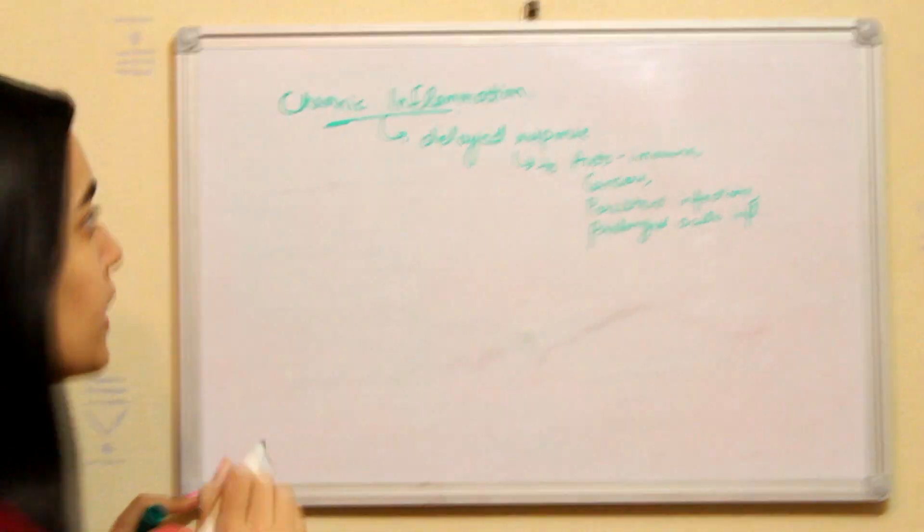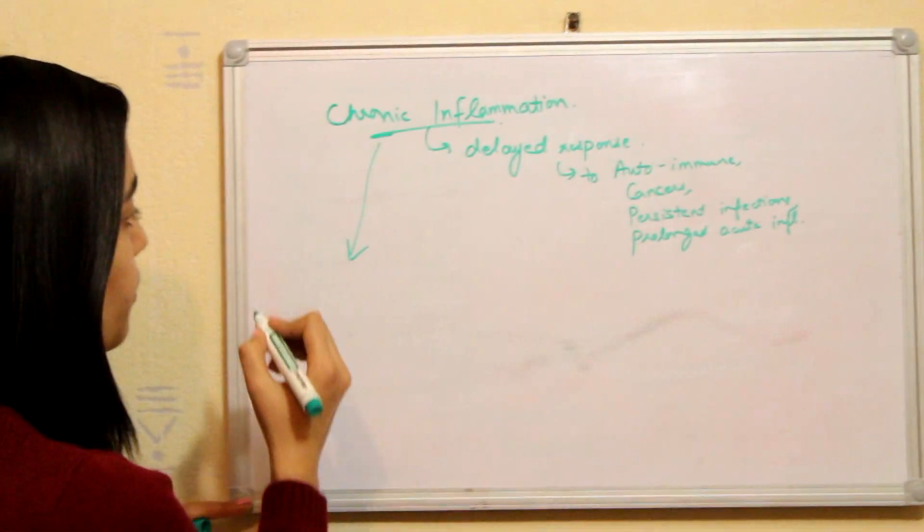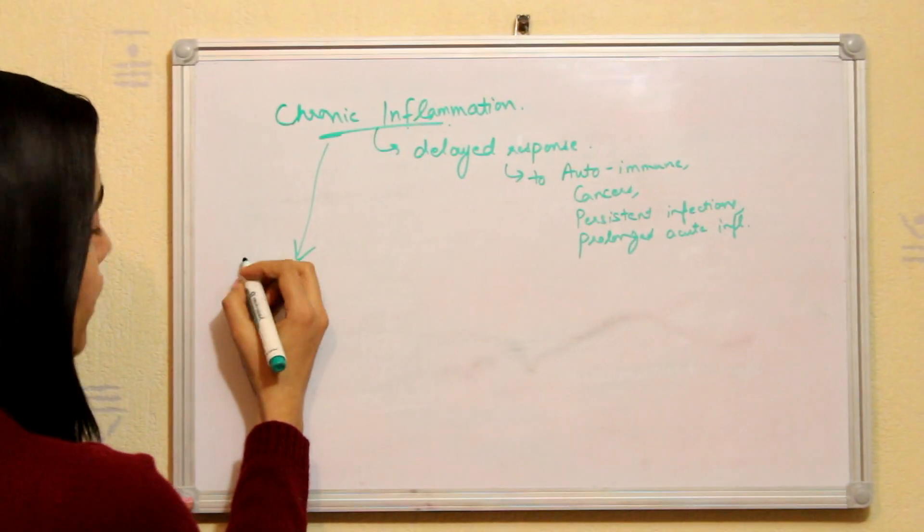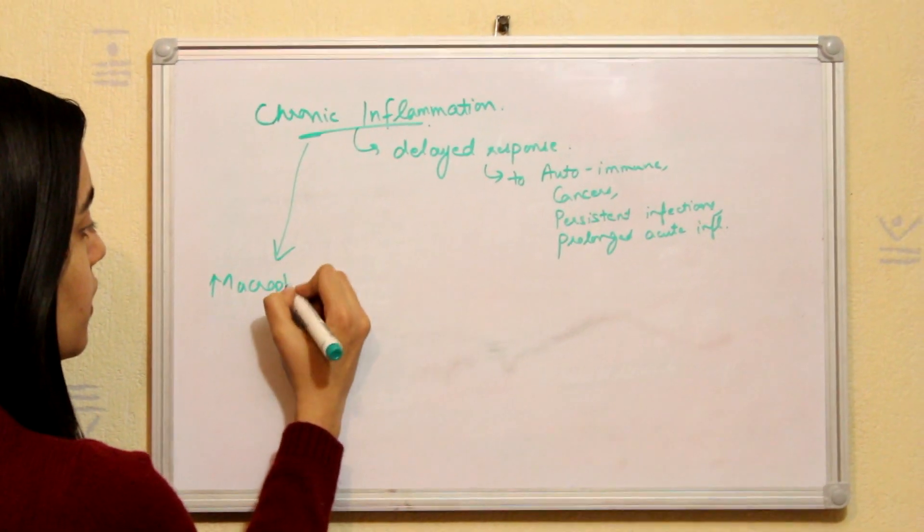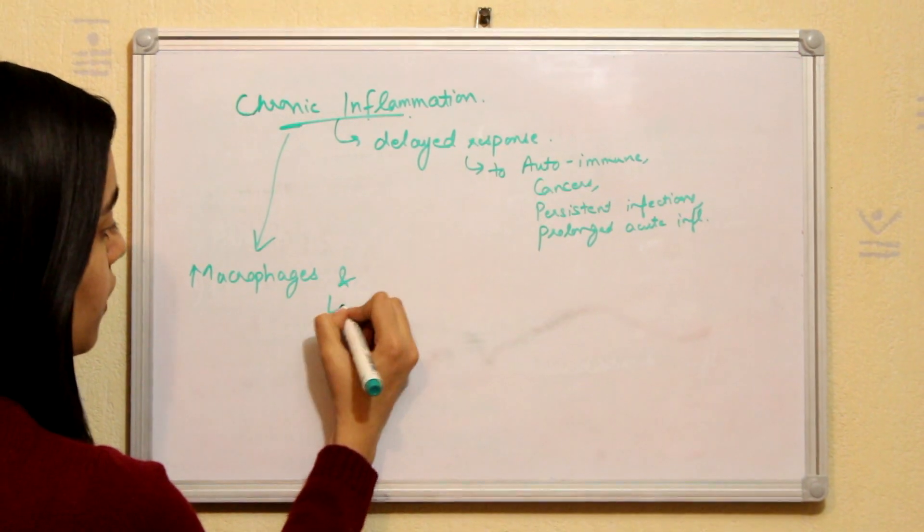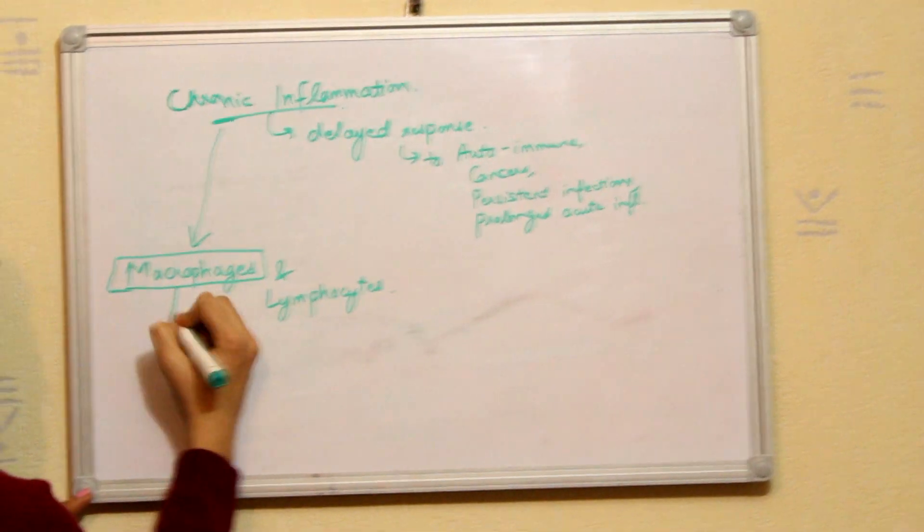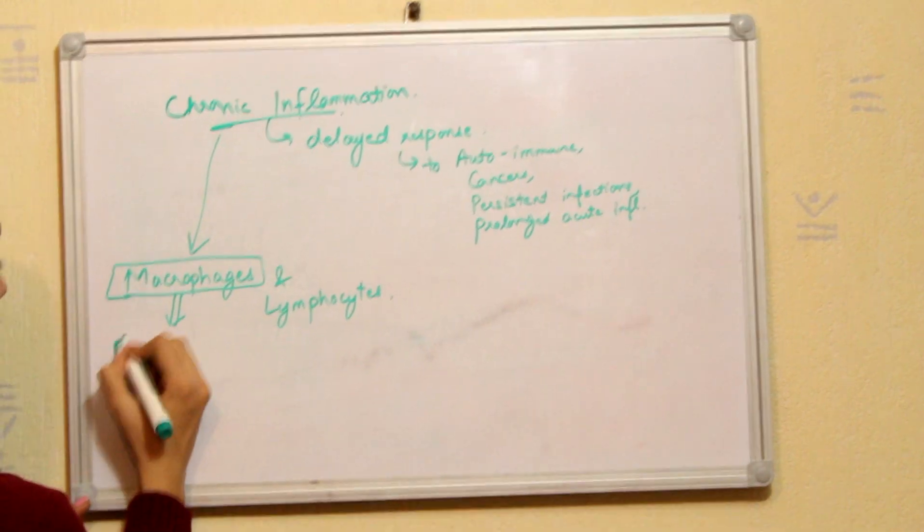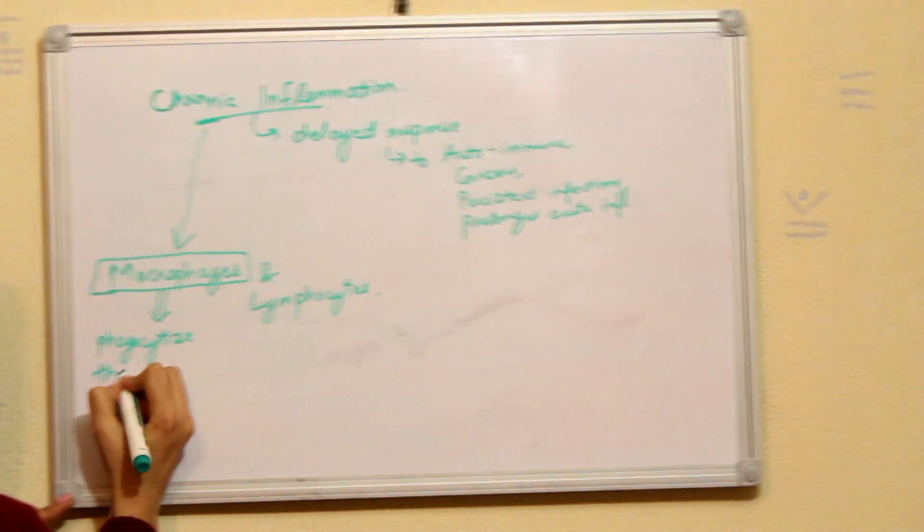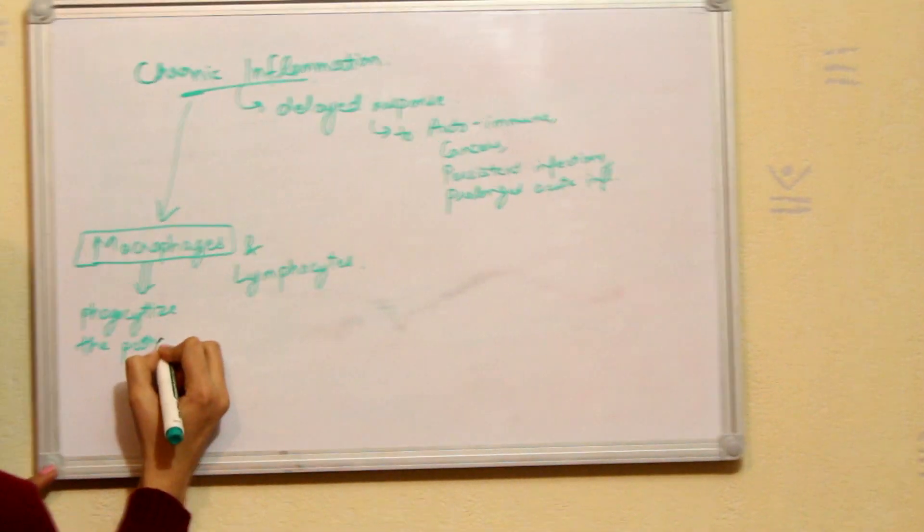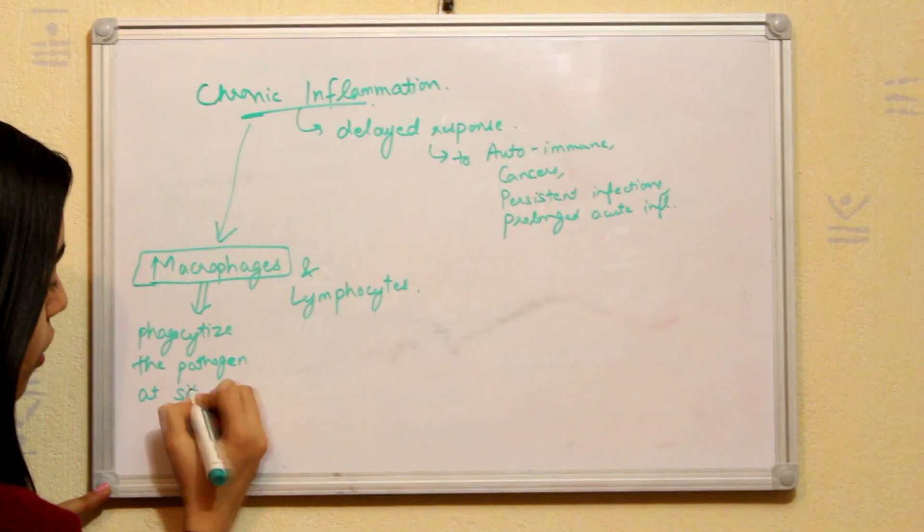And the basic characteristic of chronic inflammation is that the two types of primary cells are macrophages and lymphocytes. Now what is the function of macrophages? Macrophages, as we all know, they phagocytize the pathogen or for that matter anything that is available at the site of inflammation.